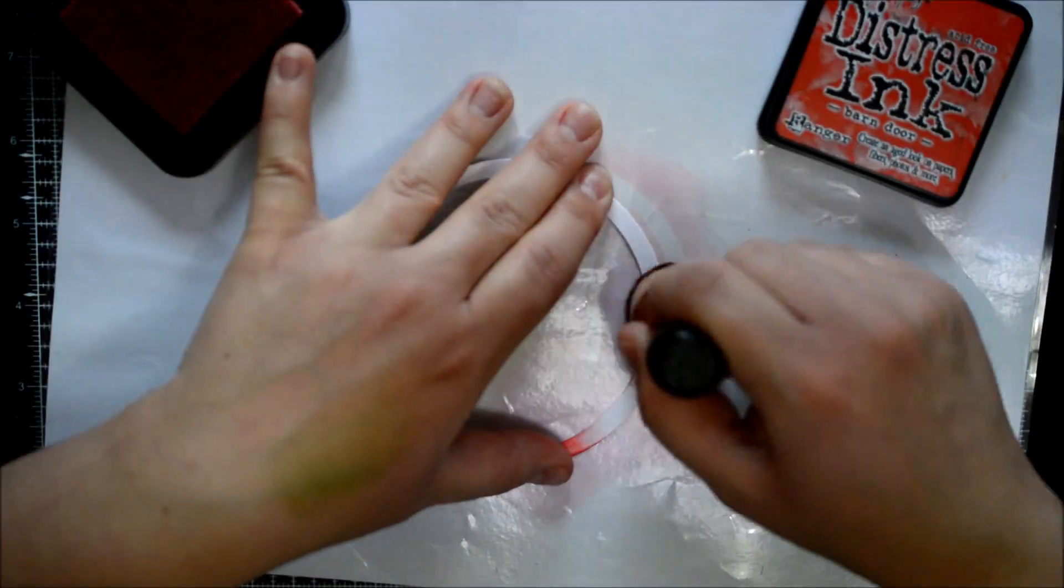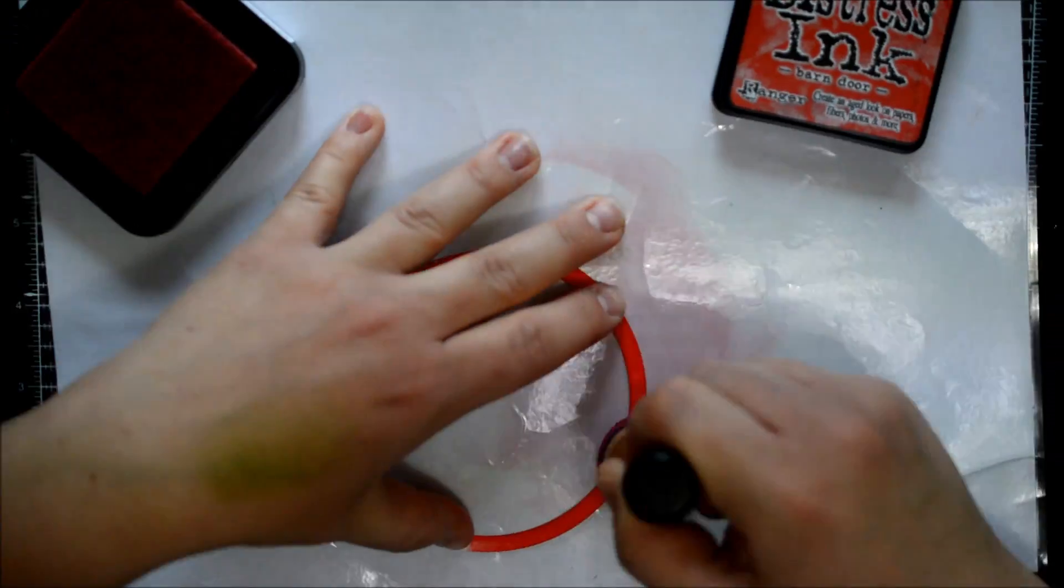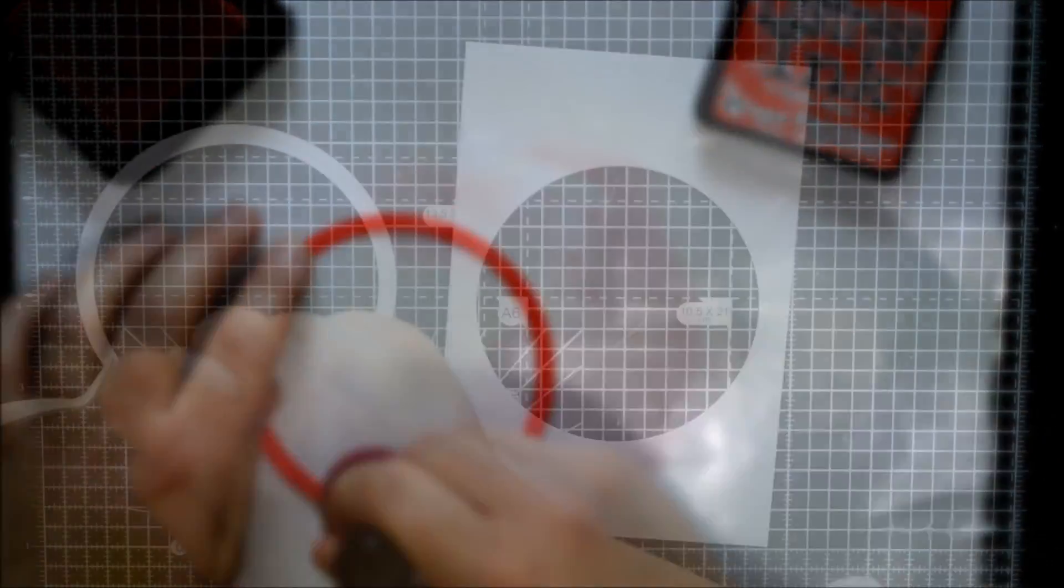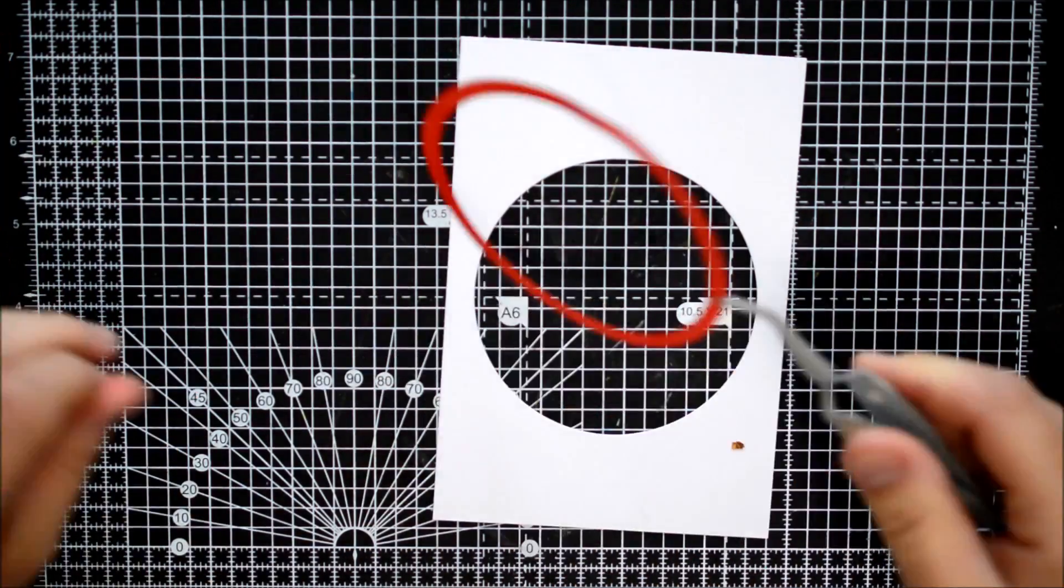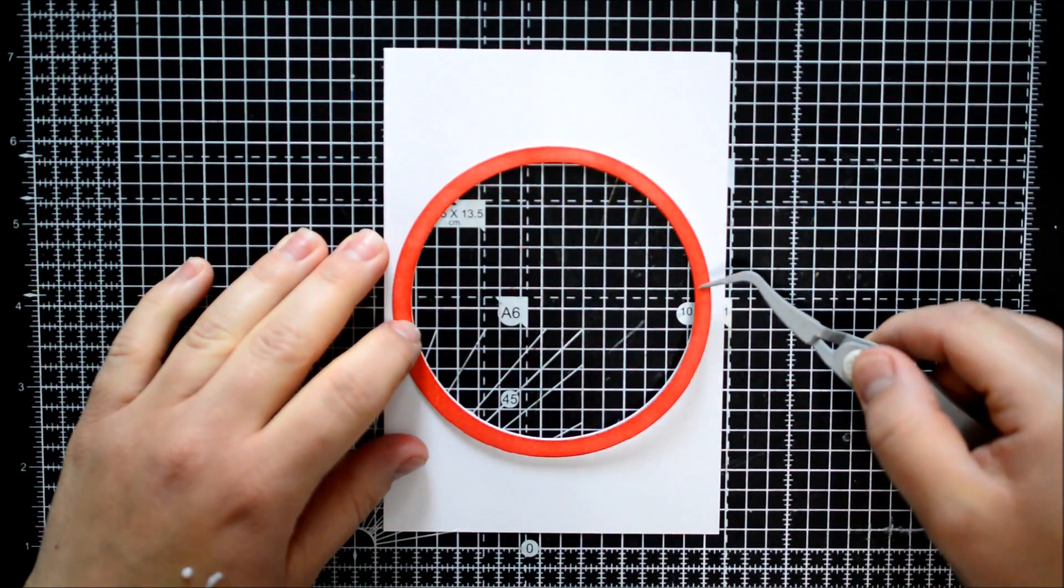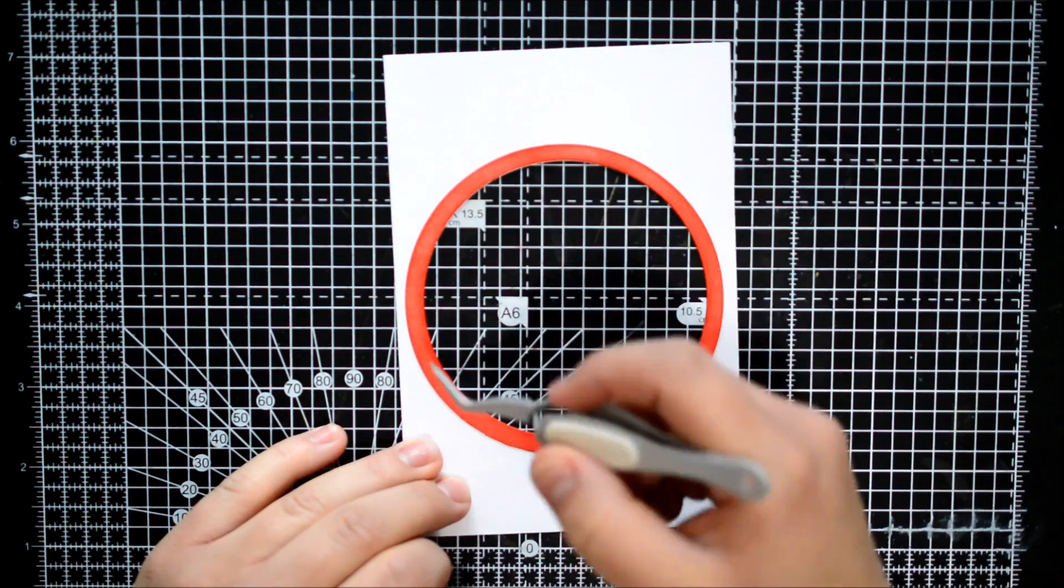For the last pieces I actually cut off a circle that will go on the front of my card. So the front of my card is white but I still get the color I want. I used some Ranger Matte Multi Medium to glue that circle around the front card and it dries pretty quick so I can go ahead with the rest of the card.